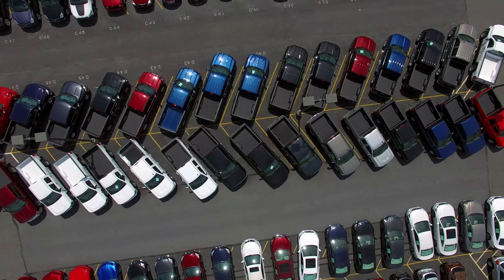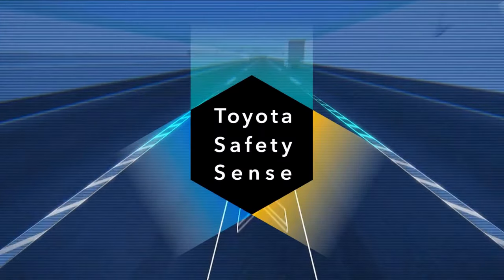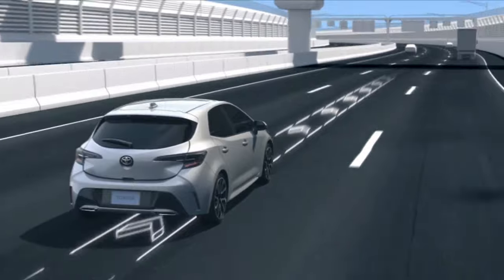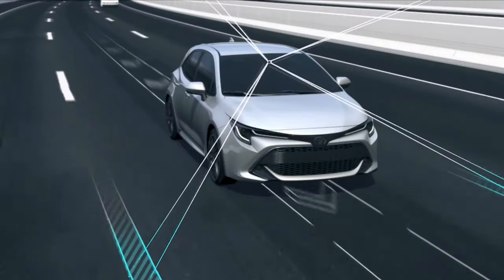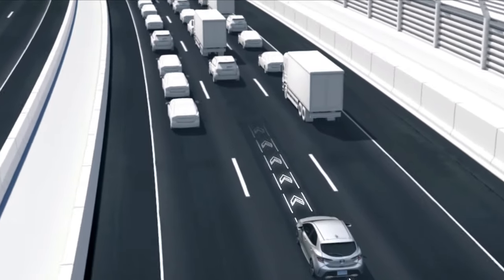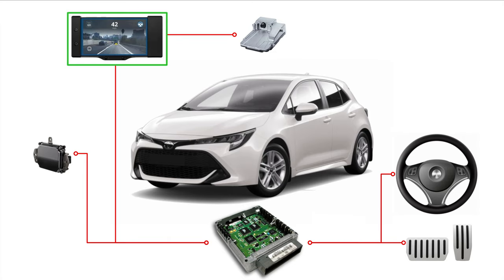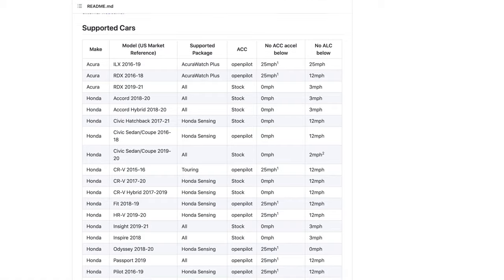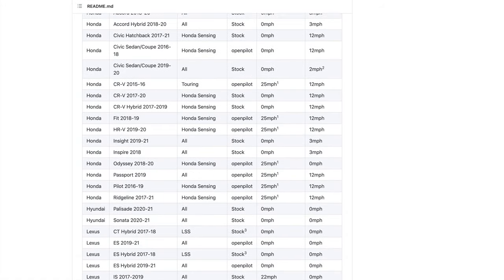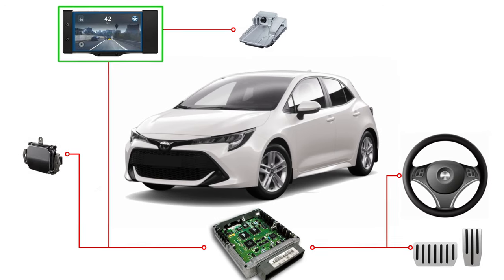Not all cars are created equal, so there are some differences that can cause compatibility issues or limitations on what OpenPilot can do. For steering control, the camera is essentially always located at the top of the windshield and easily accessible, but this isn't always the case for cruise control. Some vehicles separate the two systems — the steering commands are processed by the camera module while the acceleration commands are processed by a separate control unit located elsewhere in the car. This means we can no longer be the man in the middle for both, which is why some vehicles on the supported car list still use the factory cruise control systems in combination with OpenPilot. There are ways to work around this, but I want to keep this video pretty basic, so I'll stop there for now.